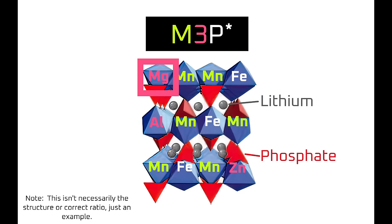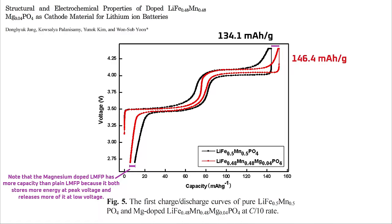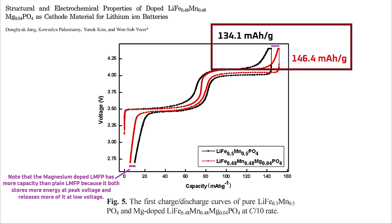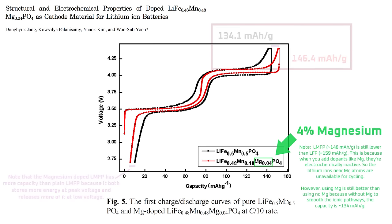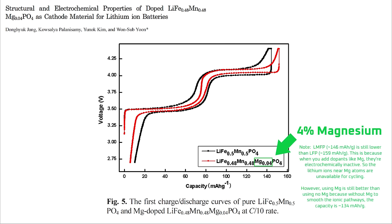The question is, how much of an impact does doping with magnesium have on the energy capacity of the cathode? The graph on screen shows that the net result of magnesium doping is an increase in capacity from 134.1 mAh/g to 146.4 mAh/g — about a 9% improvement. Not bad for swapping out just 4% of the electrochemically active iron with inactive magnesium.